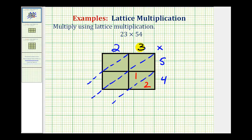For this product, we'll have three times five — that's fifteen, so we'll put the one here and the five here. For this cell, we have two times four — that's eight, so we'll put a zero here and eight here. And for this rectangle, we have two times five, which is ten, so we have a one here and a zero here.